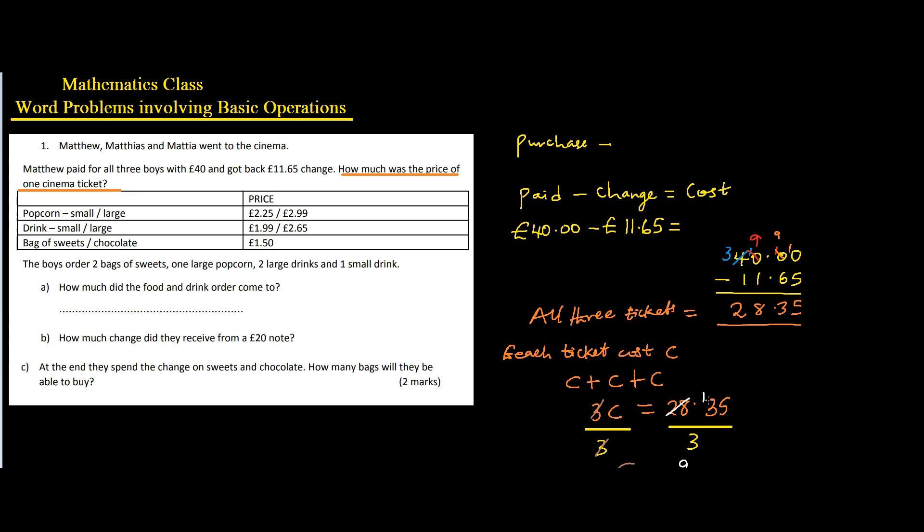Then how many threes in 13? Three times four is 12, so I can say four, remainder one again, making 15 with the remaining digit. So how many threes in 15? This is five. So it means each ticket is going to cost 9.45 pounds.